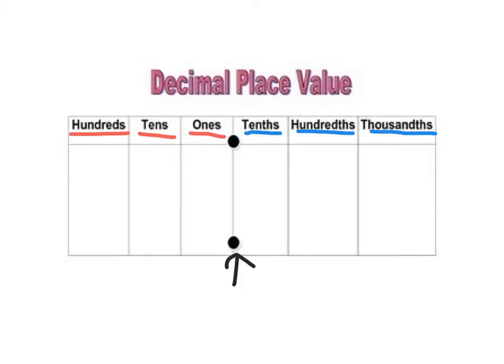You can also see that besides ones, once we get behind the decimal point, we start dealing with the same order going this way as we go this way. So it's tenths, hundredths, thousandths. The next would be ten thousandths, hundred thousandths, millionths, et cetera. But for our purposes here in grade 6, we only have to worry about up to a thousandth.